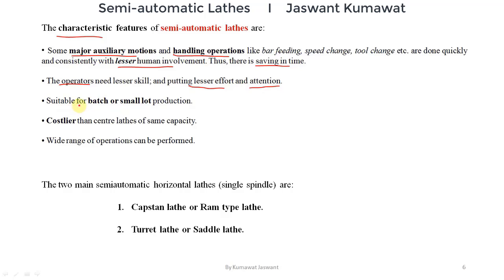These machines are mainly suitable for batch and small lot production. Generally, production is of three types: job production, batch production, and mass production. Job production is done to fulfill customer-specific orders — low volume, small lot size, and generally one kind of product — such as the production of spacecraft, aircraft, or machine tools.